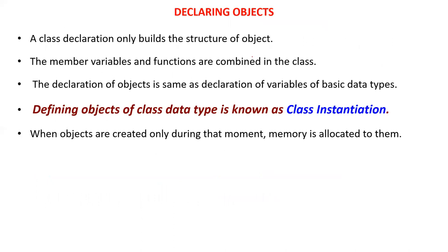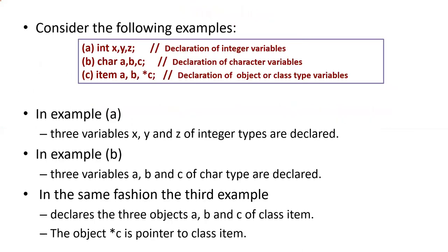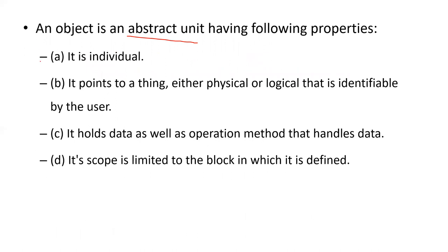How do we declare an object? The member variables and functions are combined in the class. The declaration of an object is the same as the declaration of a variable of a basic data type. Defining objects of a class data type is called class instantiation. Memory is allocated to objects only at the moment they are created. An object is an abstract unit — it points to a thing, either physical or logical. It holds data as well as operational methods, and its scope is limited to the block in which it is defined.